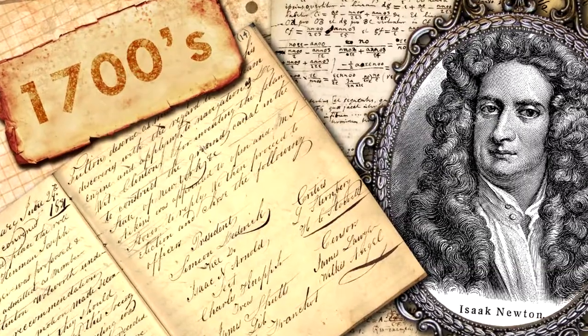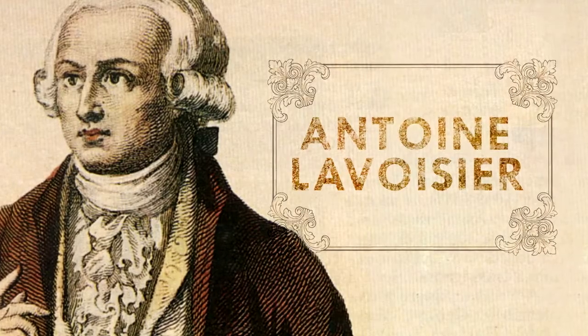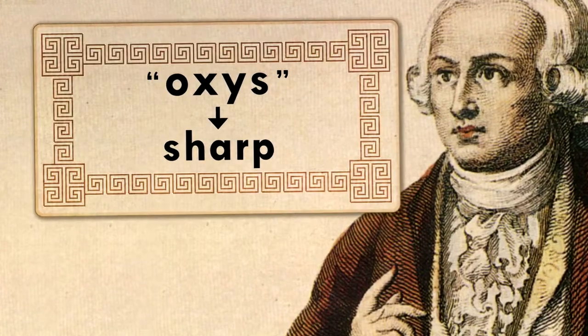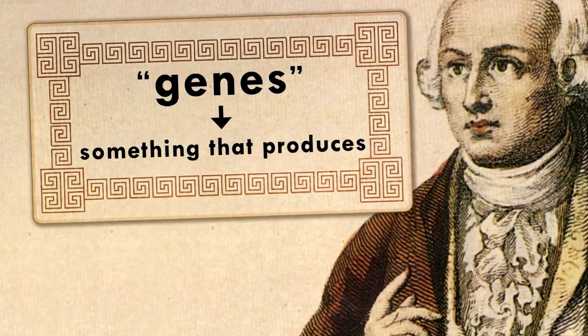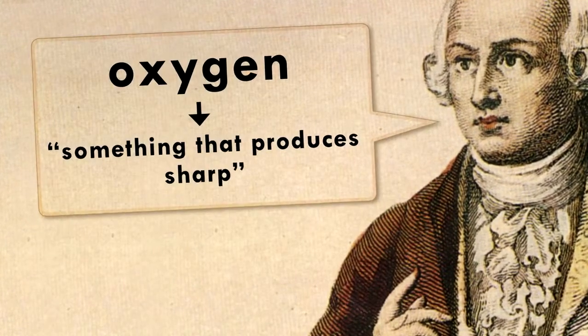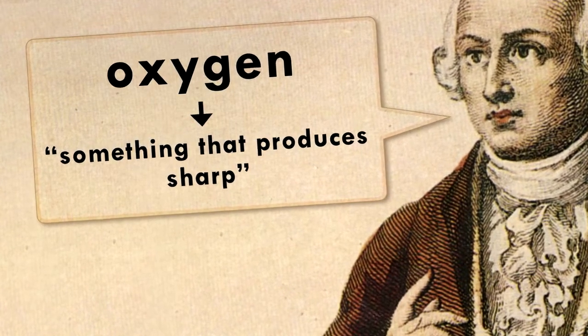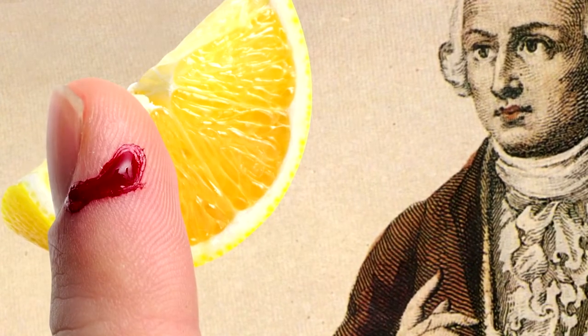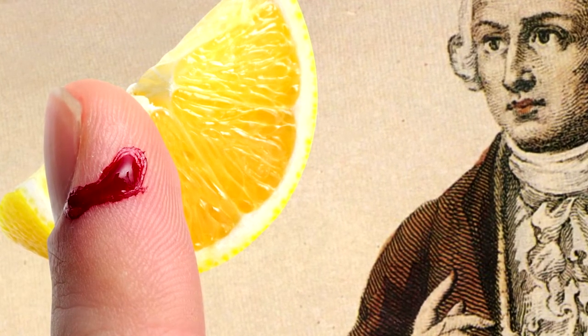The first scientific definition of an acid came from Antoine Lavoisier. He thought acidity came from oxygen atoms and molecules — and that's in fact where the name oxygen comes from. Its origins are in the Greek: oxus, meaning sharp, and genus, meaning something that produces. So oxygen was something that produces sharp to Lavoisier. If you've ever gotten lemon juice in a cut, you're very familiar with the sharp pain an acid can cause. Anyway, Lavoisier was wrong. Once scientists discovered that not all acids contain oxygen, they needed a new definition.